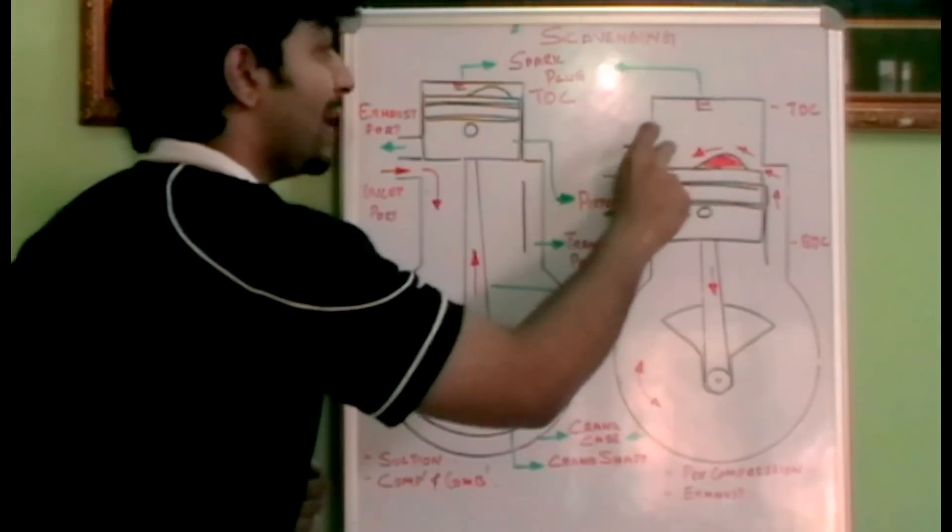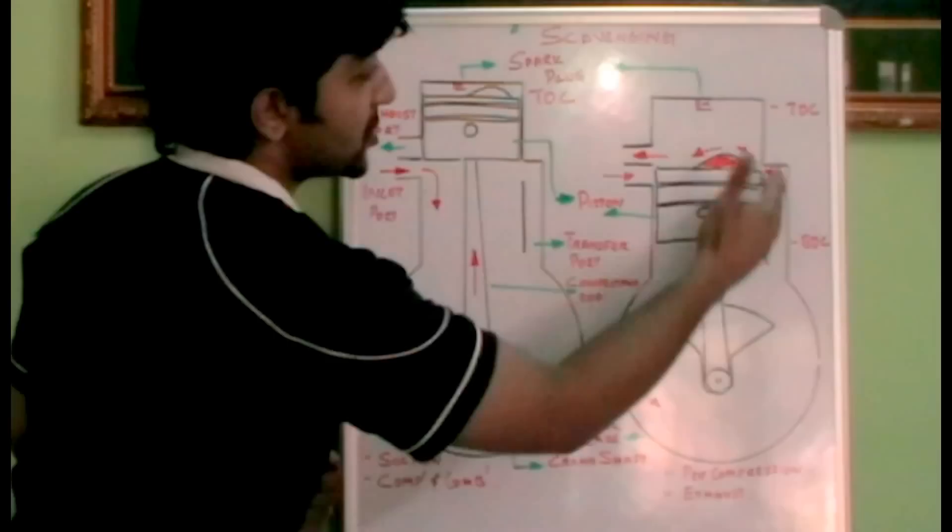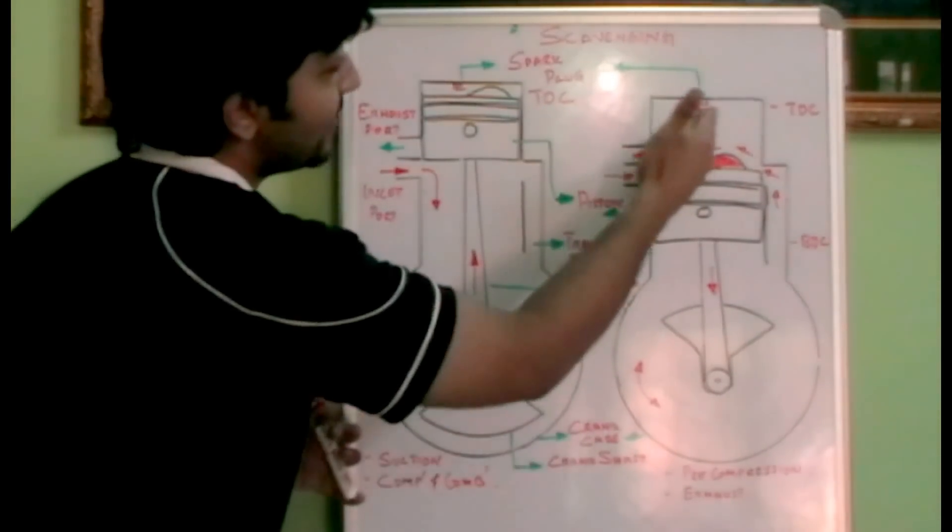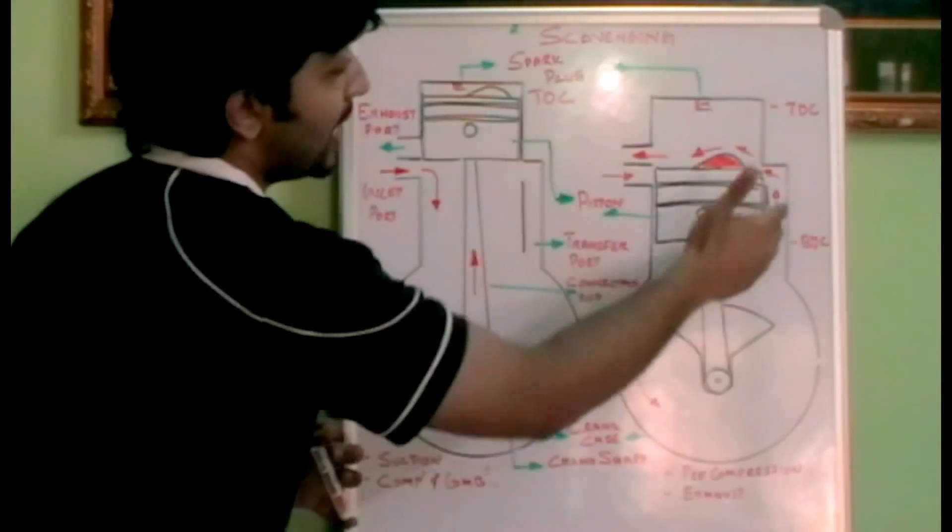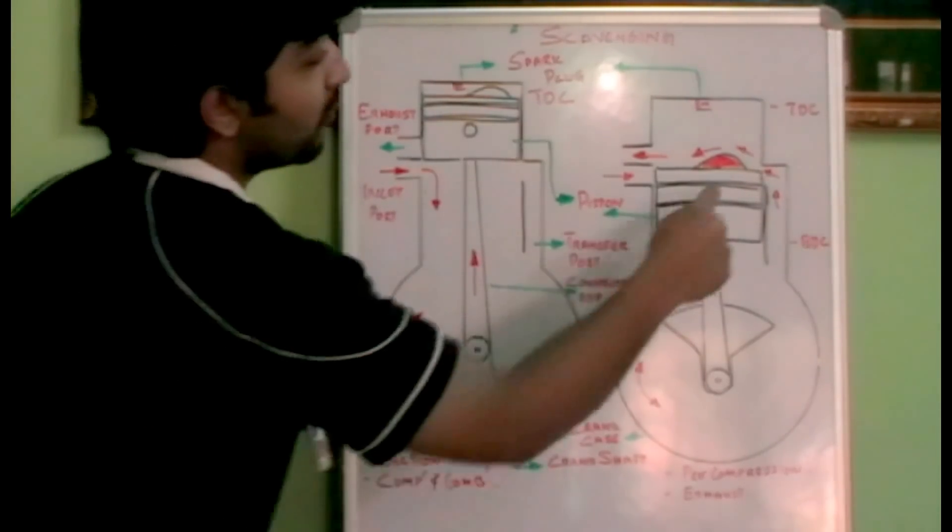The exhaust gas is pushed and escapes through the outlet port because the fresh charge is pushing it outside. This process of pushing the exhaust gas outside with the fresh charge is called the scavenging process.